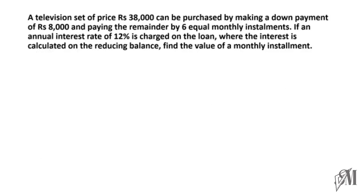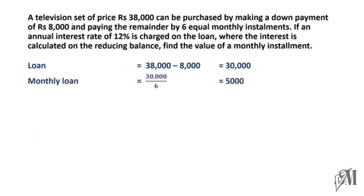Example 1: A television set of 38,000 rupees can be purchased by making a down payment of 8,000 rupees, with the remaining paid in six monthly installments at an annual rate of interest of 12%. We need to calculate the monthly installment. First, we find the loan: purchase price minus down payment gives 30,000 rupees. The monthly loan is 30,000 divided by 6, which is 5,000 rupees.